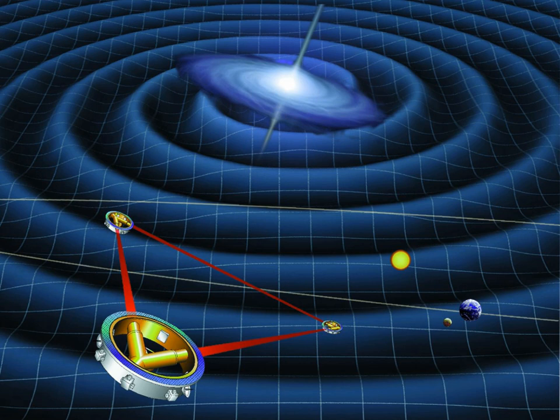The LISA mission is designed for direct observation of gravitational waves, which are distortions of space-time traveling at the speed of light. Passing gravitational waves alternately squeeze and stretch objects by a tiny amount.